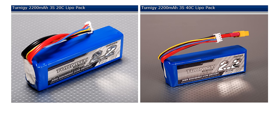Now let's talk about C ratings. Here are two batteries that seem identical. They both have a nominal voltage of 11.1 volts and a capacity of 2200 milliamp hours. They look the same, but one of them has a 20C rating and the other is rated at 40C. But what is a C rating?